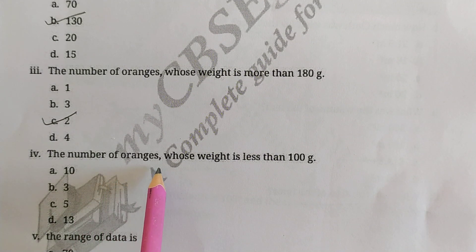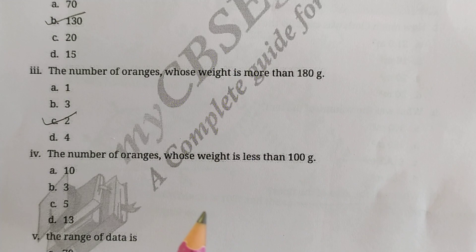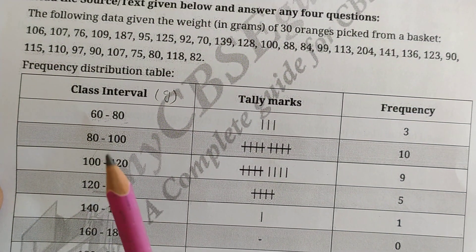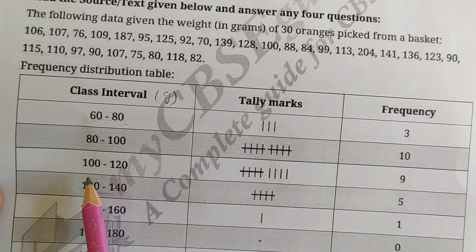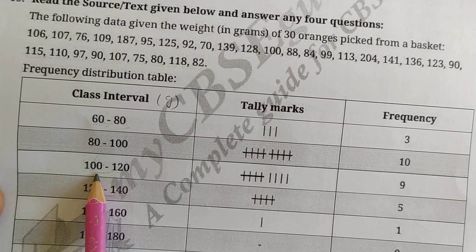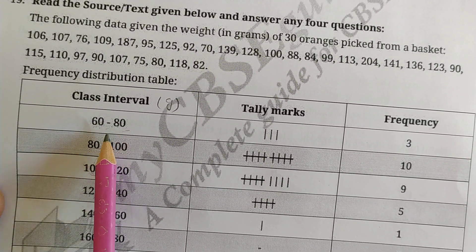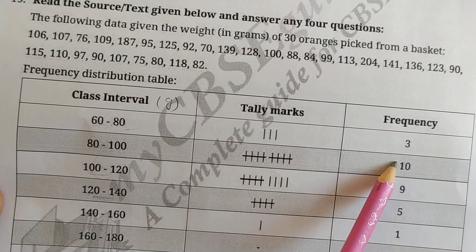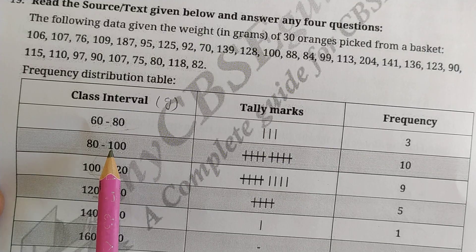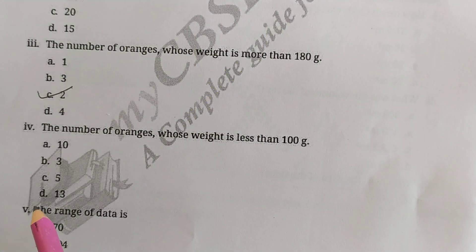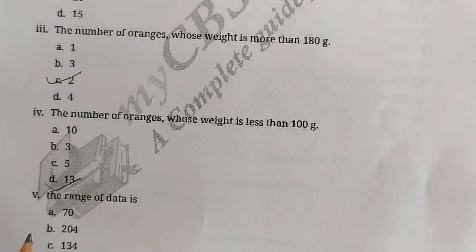The next question is: how many oranges have weight less than 100 grams? We need to consider only the intervals below 100. The 60–80 interval has 3 oranges and the 80–100 interval has 10 oranges. Adding both: 3 + 10 = 13. So 13 oranges have weight less than 100 grams. 13 is the answer.